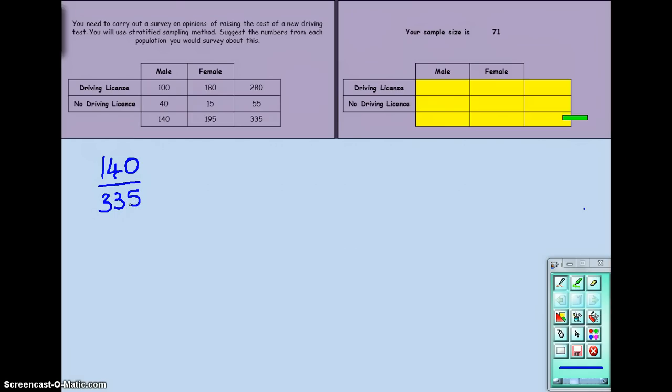So that's the fraction of our original population. And our sample population is 71. So we want 71 lots of that fraction. Now, if you type that into your calculator, you get a decimal that is 29.67 and it continues.